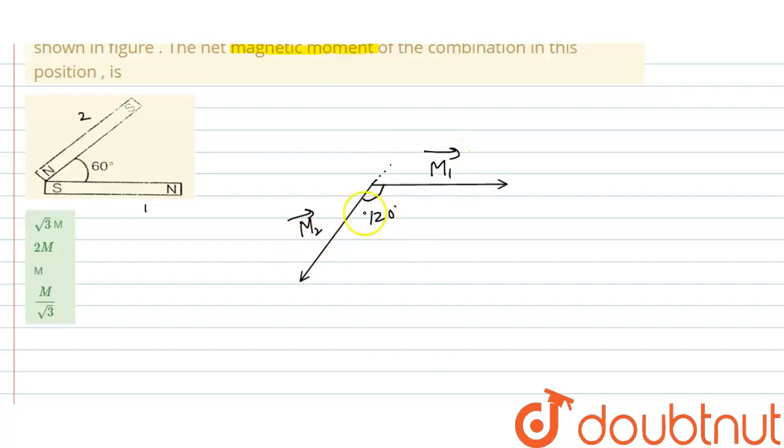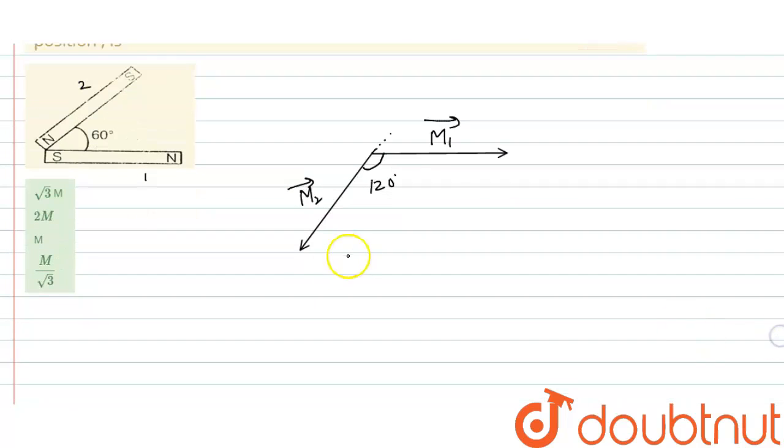So angle between M1 and M2 is 120 degrees, and their magnitudes are same, M as given in the question.